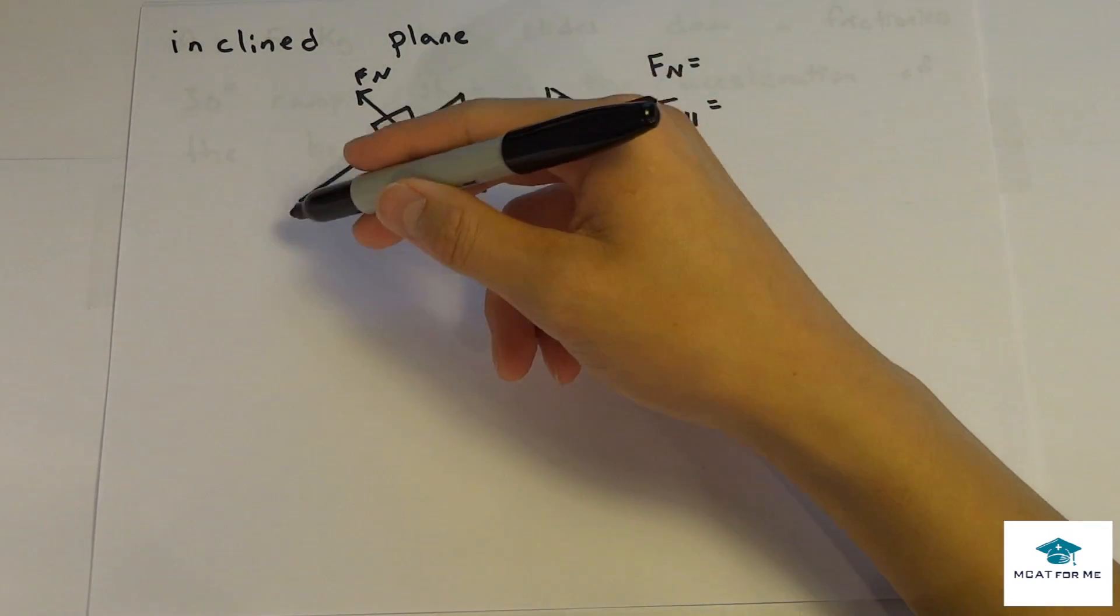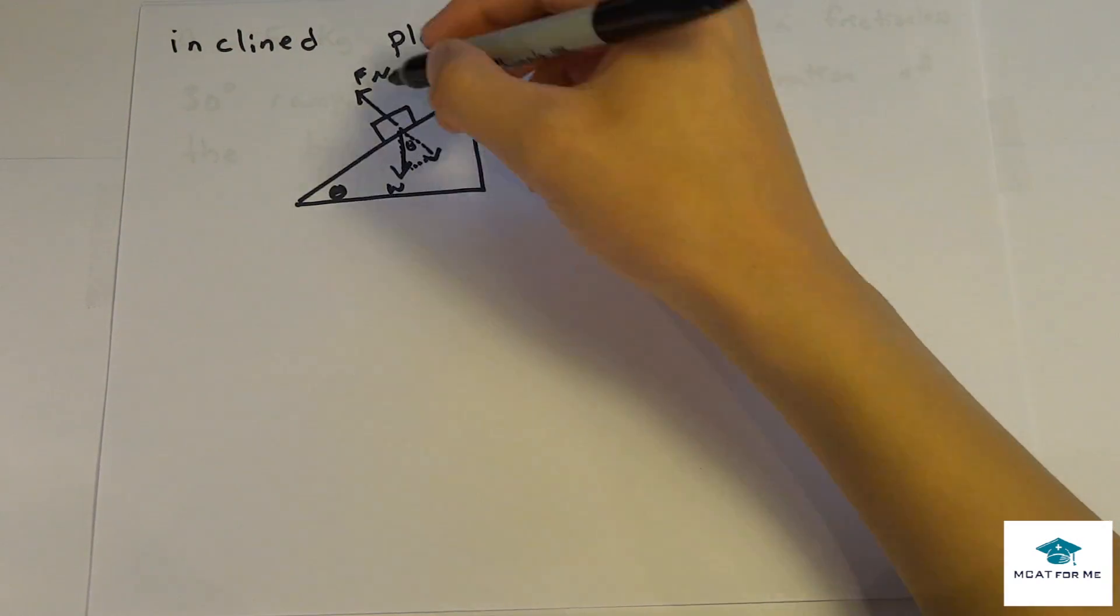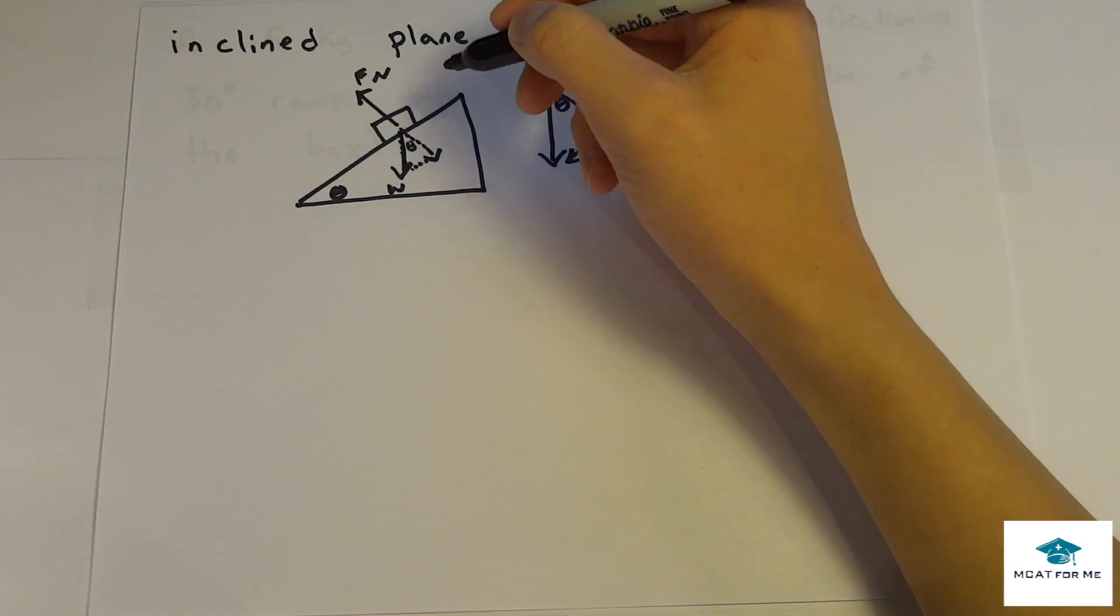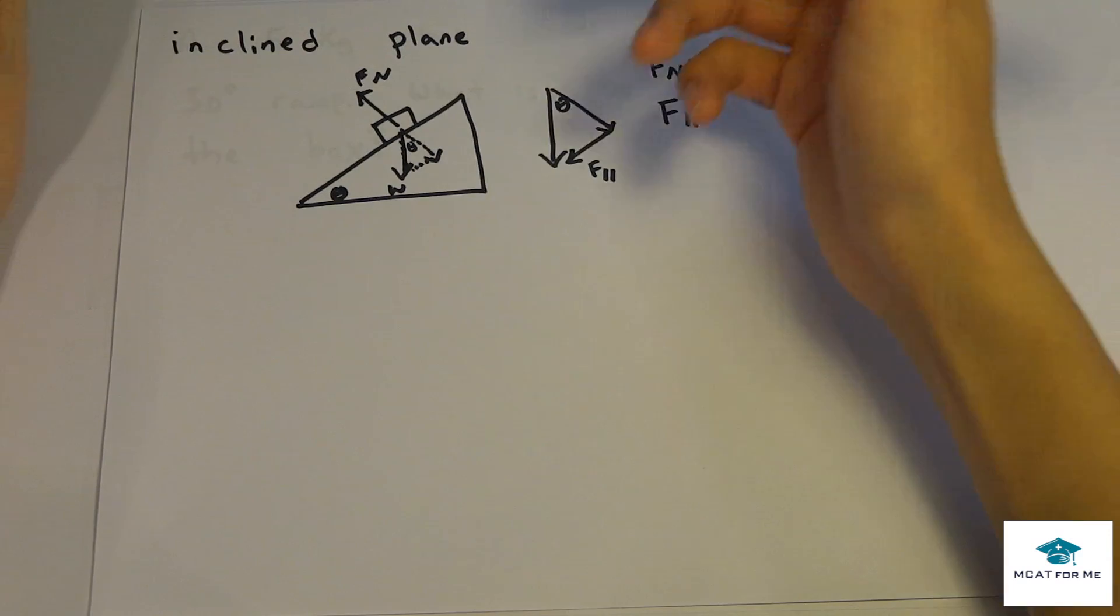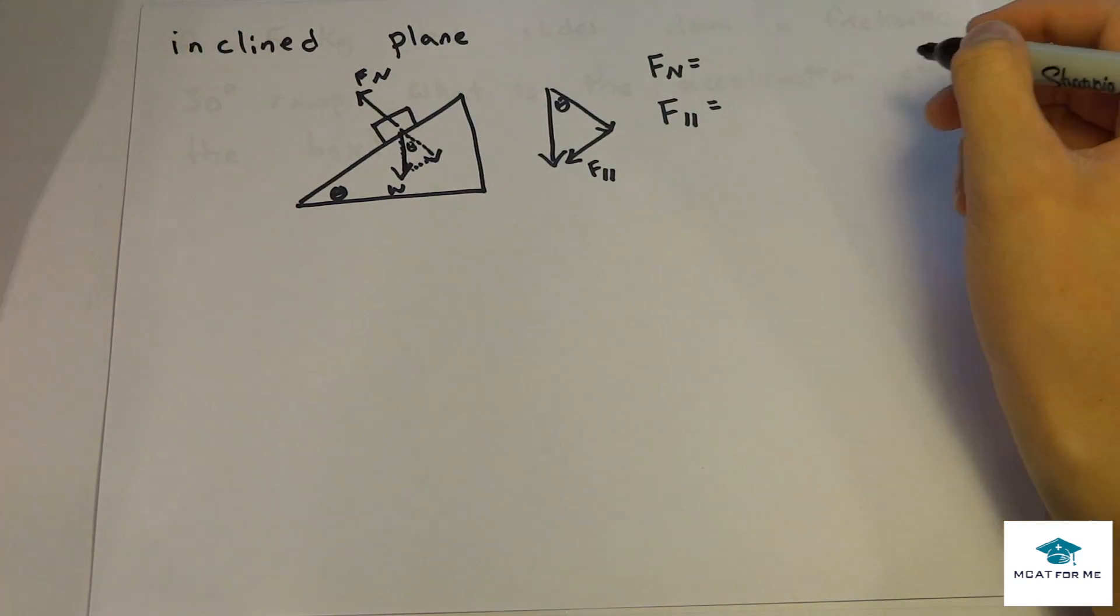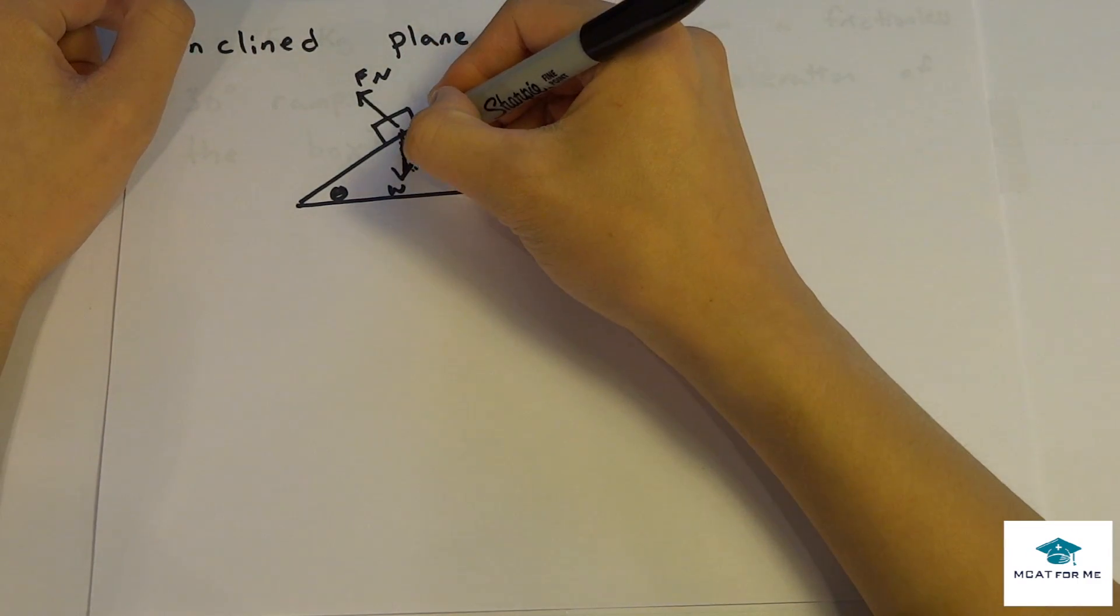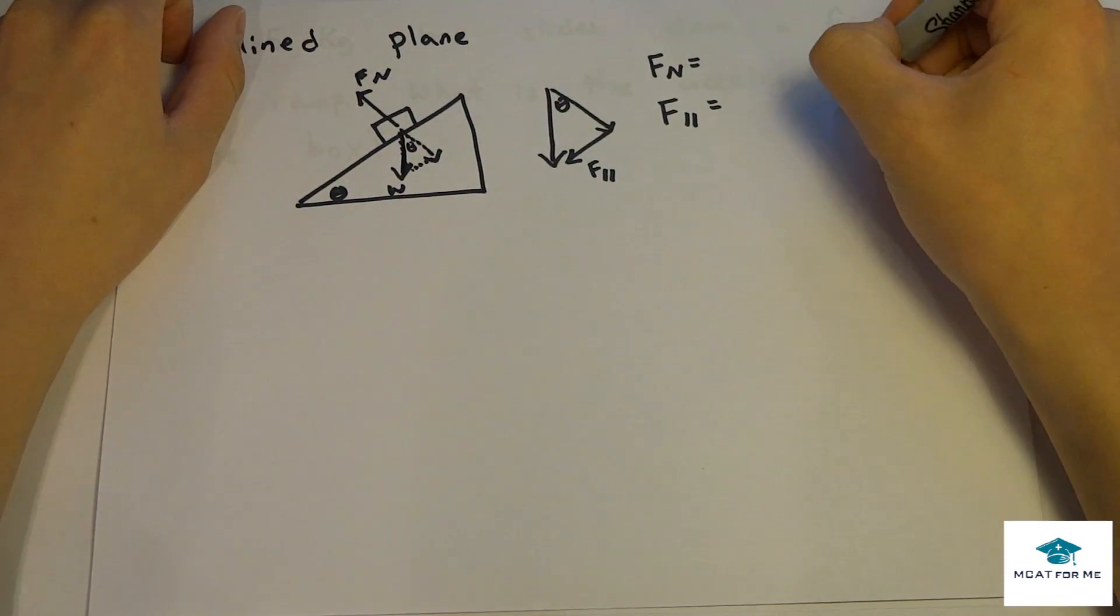So we have this inclined plane like that, and it's at an angle theta. So we have this box that's on the inclined plane, and we have to figure out a couple of things. We know that the weight of the object is always going to be vertical. The weight is always going to be in the same direction as gravity, so this is going to be the vertical direction, perfectly straight up and down.